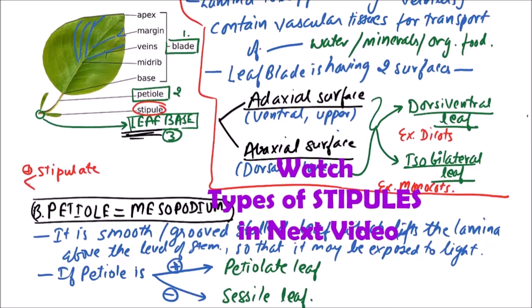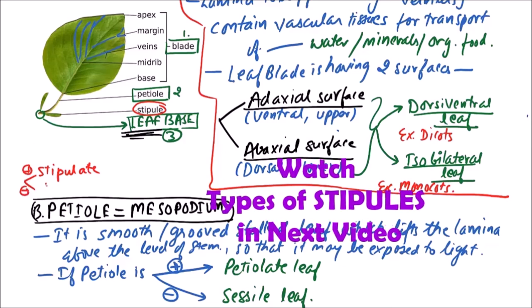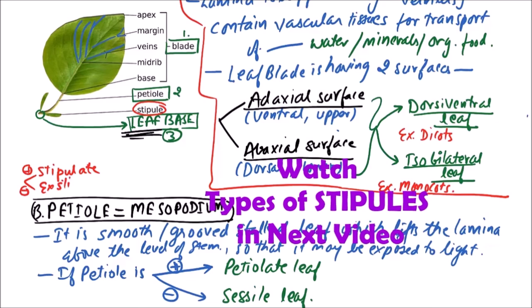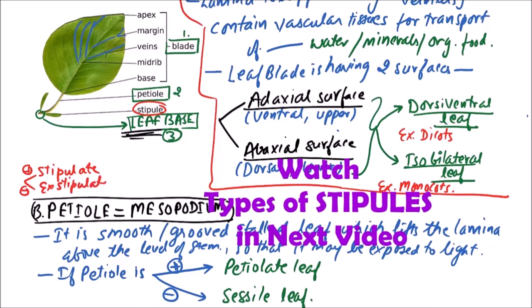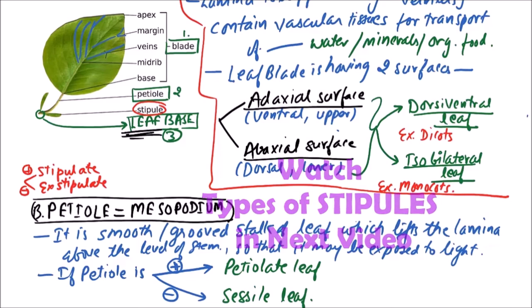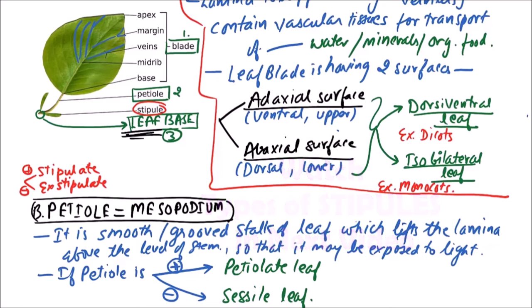While if stipules are absent, the leaf is said to be exstipulate. These are the various parts of the leaf.